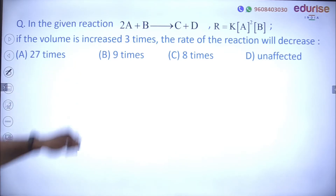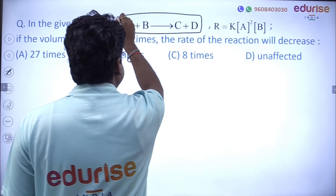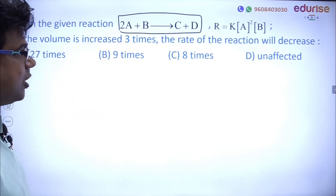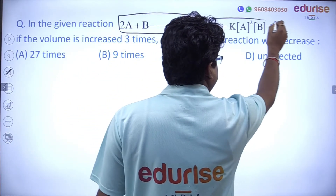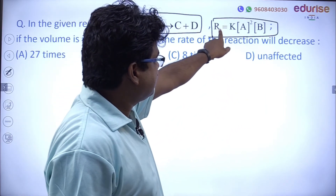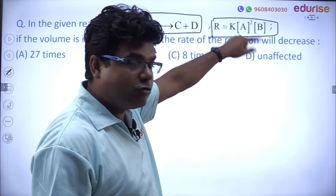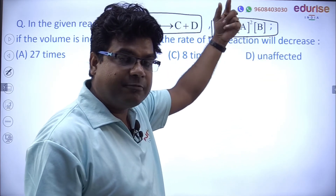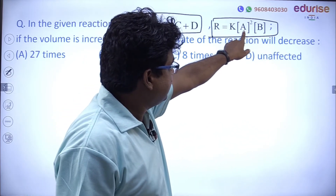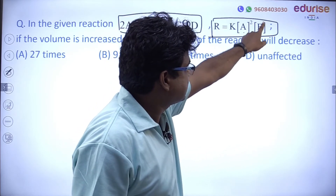The first question: the reaction given is 2A + B → C + D, an irreversible reaction. The rate law expression is given as r = k[A]²[B], where r is the rate of reaction, k is the rate constant (also called velocity constant or specific rate of reaction). The concentration of A has power 2, meaning order with respect to A is 2, and order with respect to B is 1.